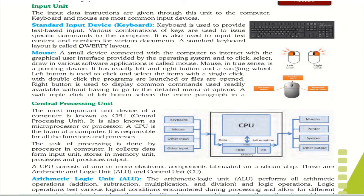Next is the mouse, connected with the computer to interact with the graphical user interface — for moving from one location to another we use the mouse. There are three buttons on a mouse: left button, right button, and scroll. Using scroll you can move from one page to another. The left button is used to click and select items with a single click; double-click launches programs or opens files. The right button displays common commands like personalization, control panel, and refresh.